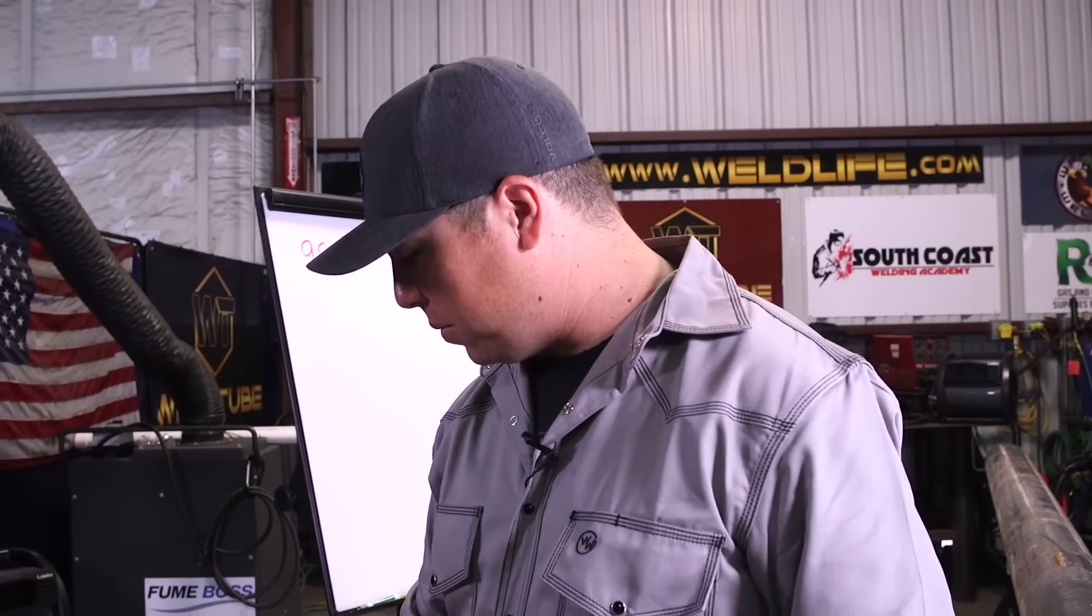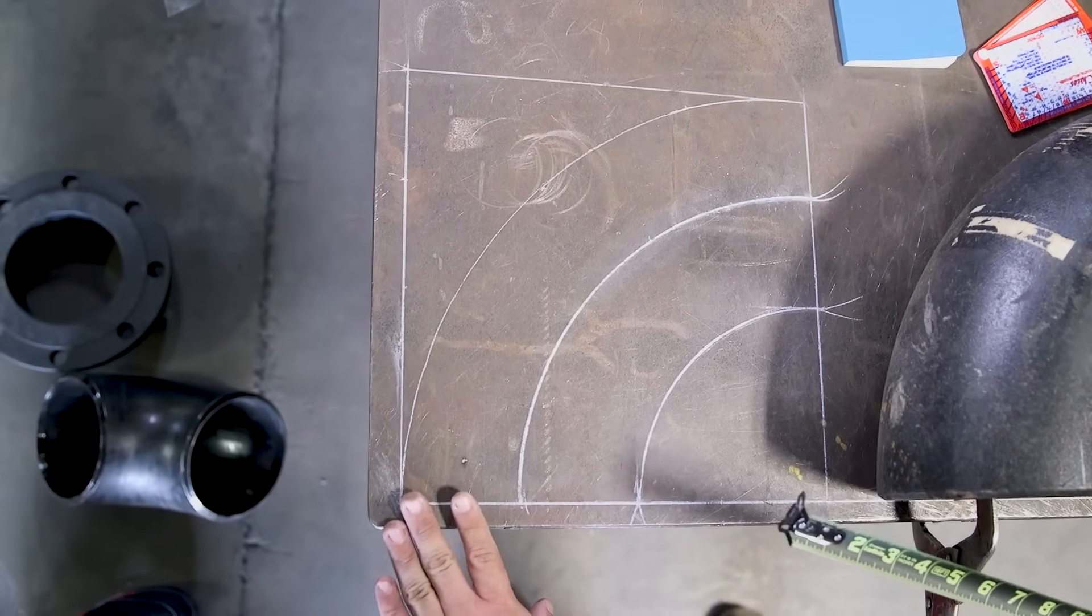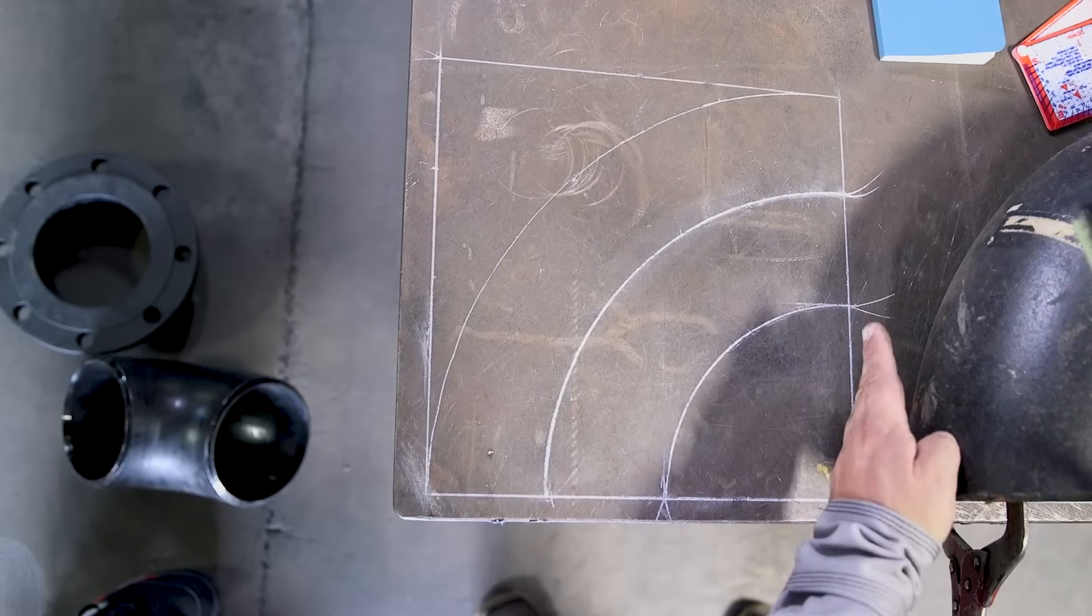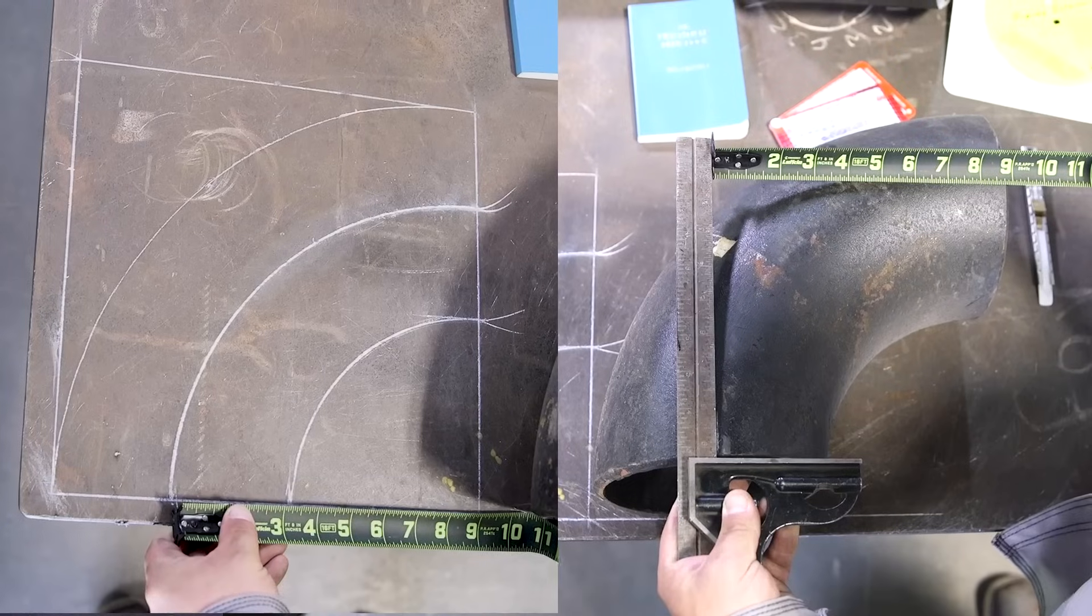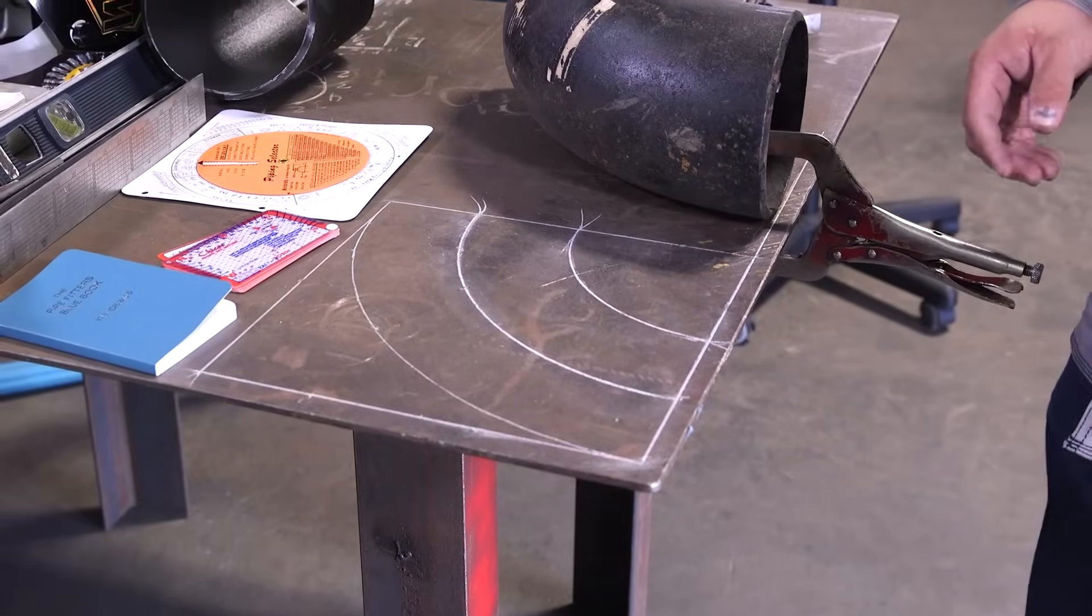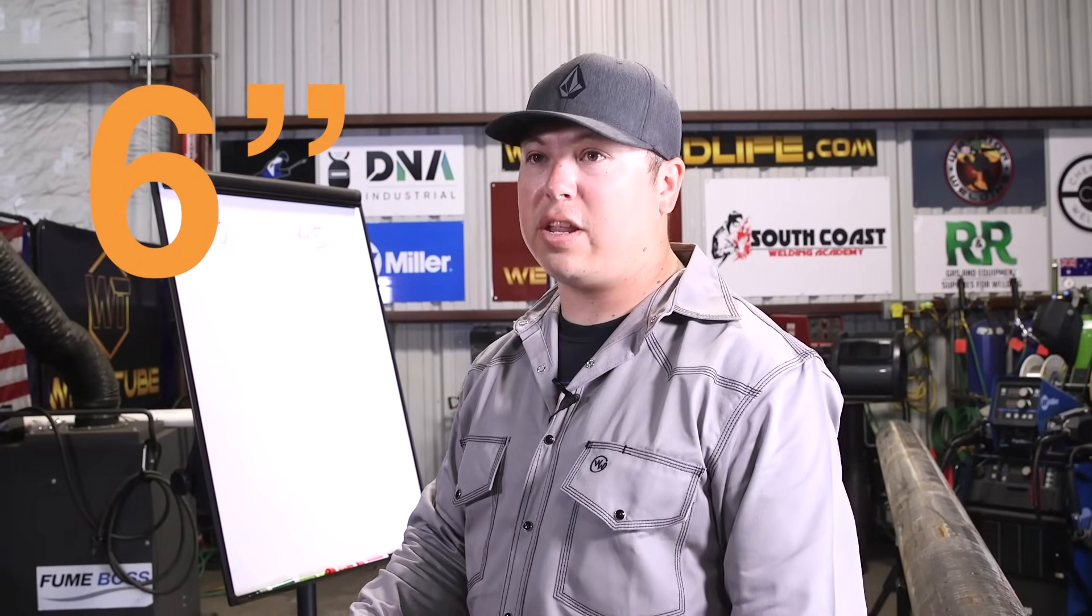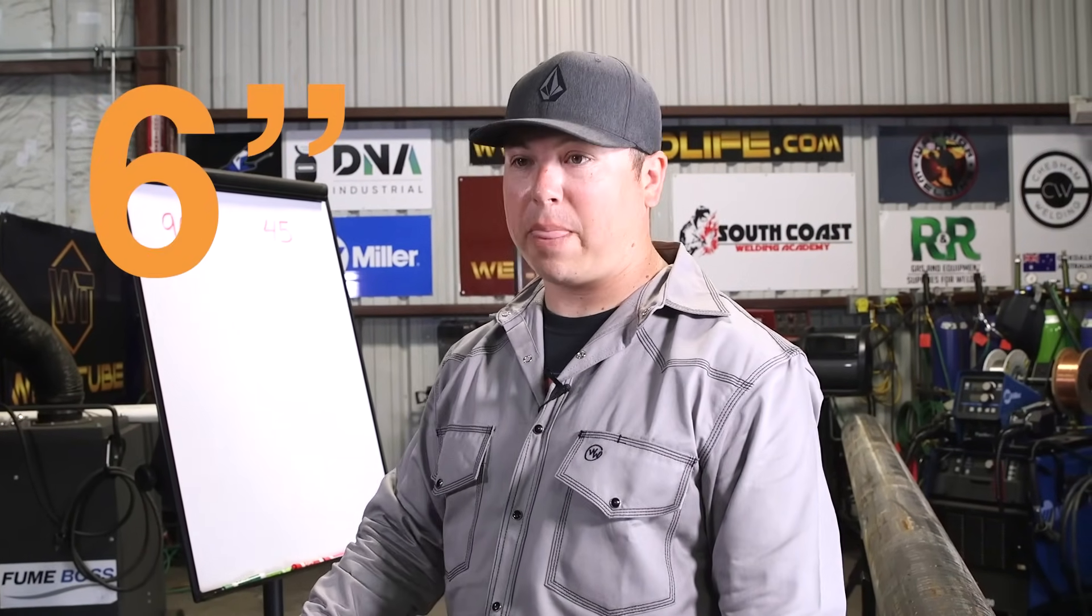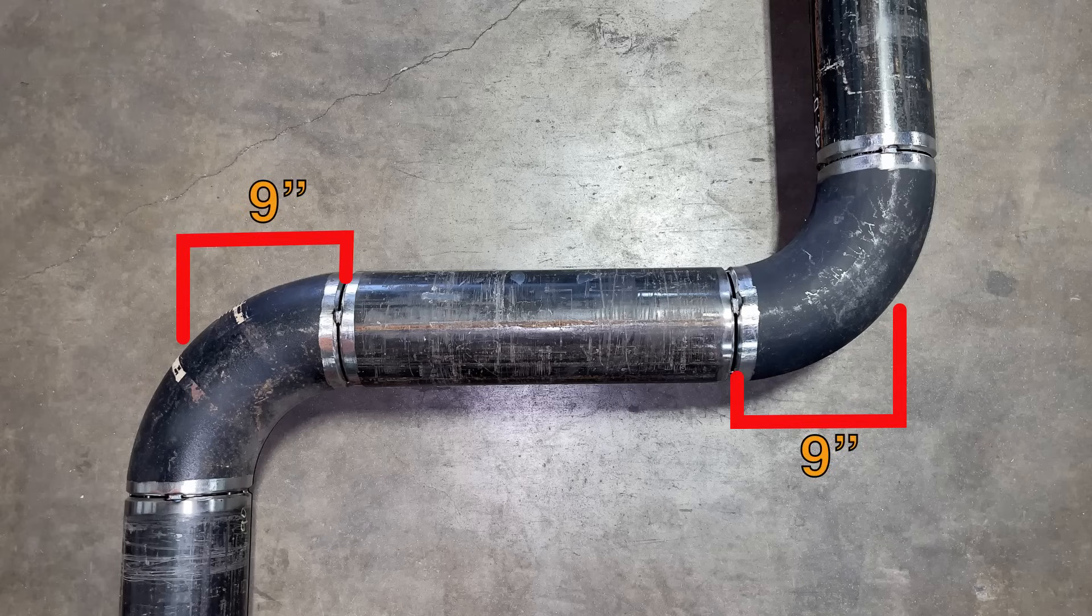So our actual takeoff is going to be from the end of pipe to the center of the 90. As you can see here guys, I've drawn this 90 out onto the table. And if we measure from this end to center here, we are going to get 9 inches. And a common way to do this also is you actually get the nominal pipe size, which would be 6 inches on this case, and then you cut that in half and you add those two numbers together. So 6 inch, cut that in half, we got 3. Add those two together and now we have 9 inches. And that is our total takeoff from end to center of pipe.